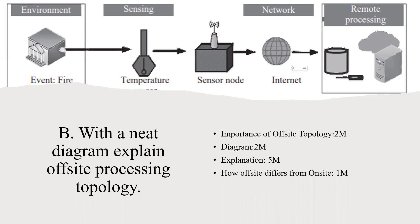You can also tell the difference between on-site and off-site processing topology, which earns one mark. Totally this question is for 10 marks: diagram is four marks, the difference/importance is one mark, and the component explanation is five marks — totalling 10 marks.